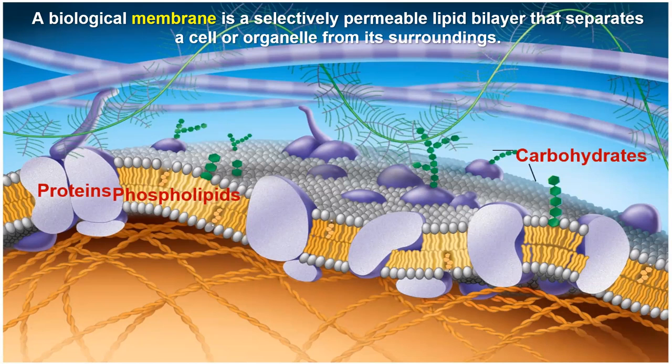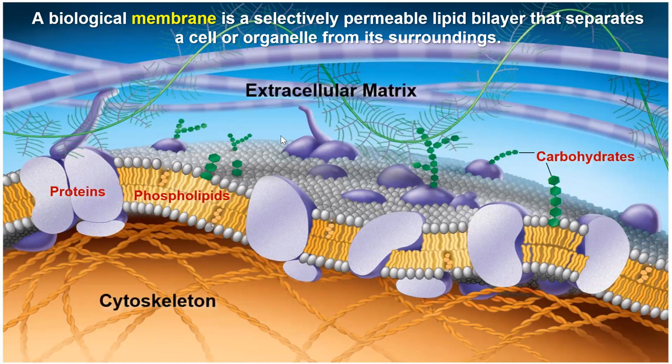In terms of what membranes are made of, they're not just lipid bilayers. They include phospholipids — that's a big part — proteins are another big part, and some membranes also contain carbohydrates. We're going to talk about all three of those things.